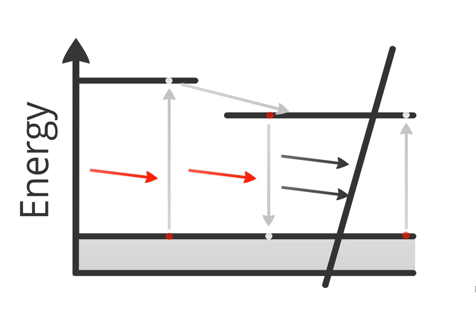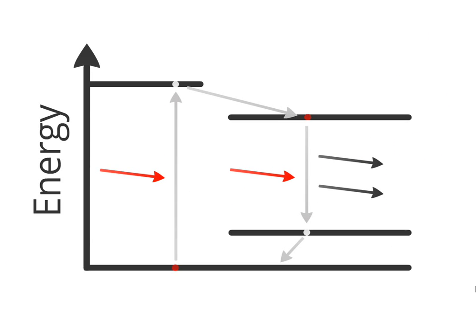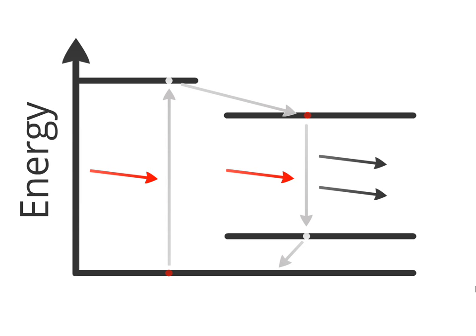The four-level laser represents this improvement. Here, the electrons which are involved in stimulated emission fall into another unstable state, then quickly transition to the ground state. This means that the lower band involved in stimulated emission is not the ground state and has a very low population, reducing the probability of lasing photons being absorbed. Hence, a four-level system wastes fewer photons and is more efficient than a three-level laser. Thank you for listening.